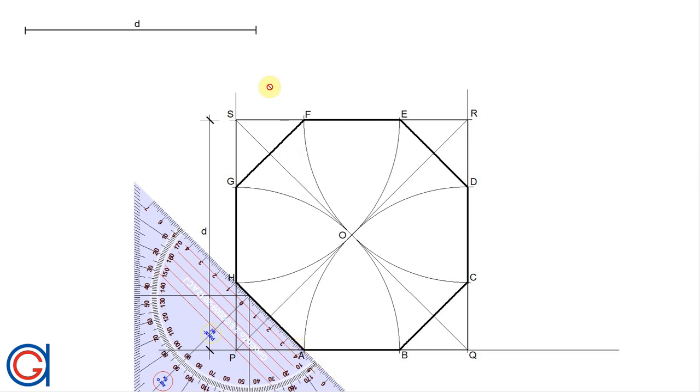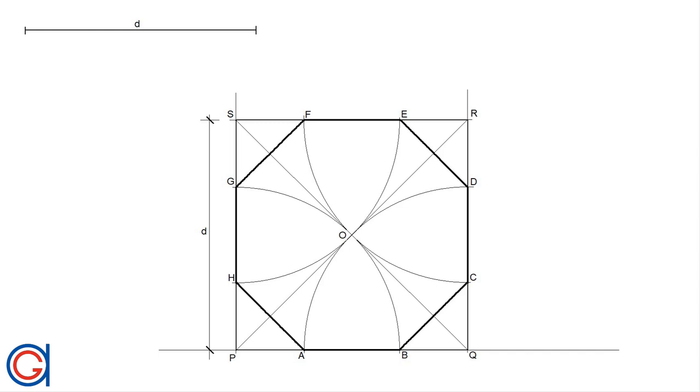So here we have our octagon, our eight-sided regular polygon, inscribed in a given square.